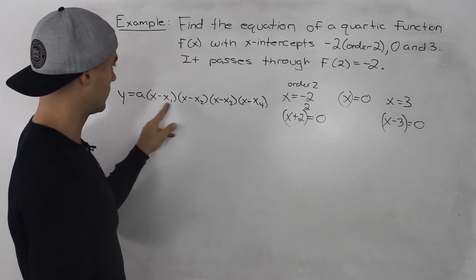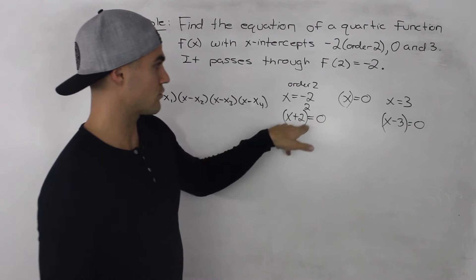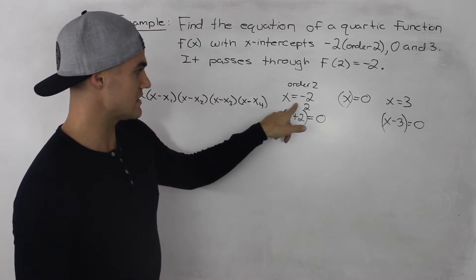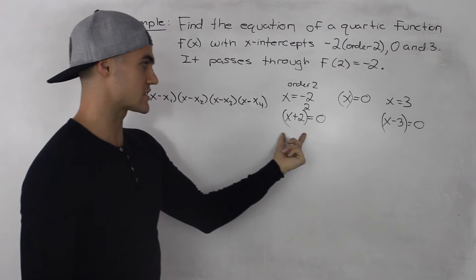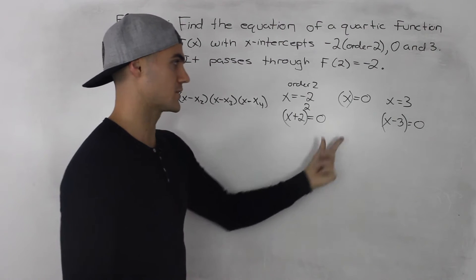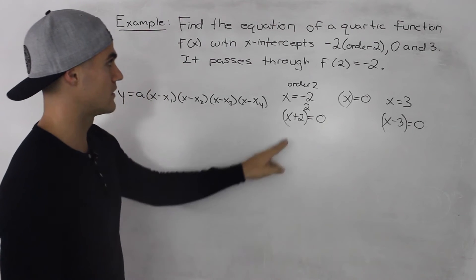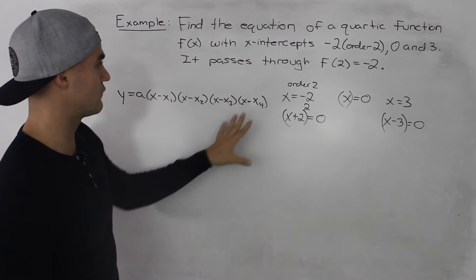So notice how we don't have 4 brackets, we only have 3, but since this bracket has an order of 2, it's almost like we have 2 brackets, (x + 2) and (x + 2). So this here represents a degree of 4.